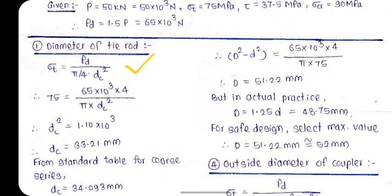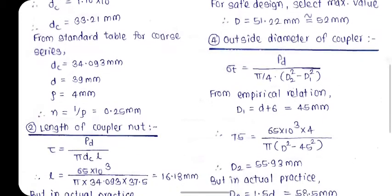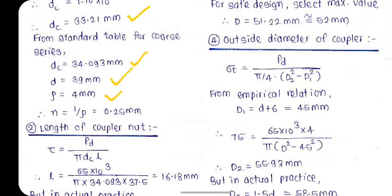Using this equation, calculate the core diameter, which comes out to 33.21 mm. Then consult the standard table for coarse series — the nearest standard value for dc is 34.093 mm. From this, the major (nominal) diameter d = 39 mm and pitch = 4 mm. The number of threads per mm length, n = 1/p, gives n = 1.25 mm⁻¹.